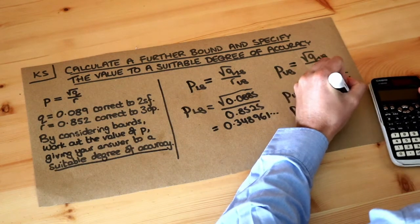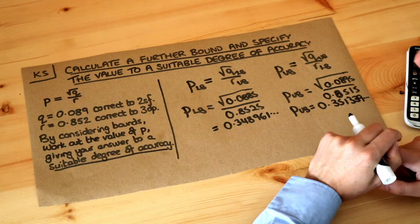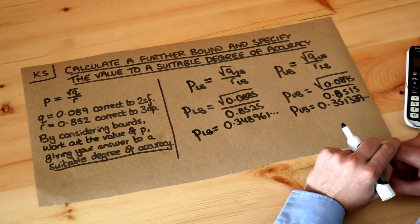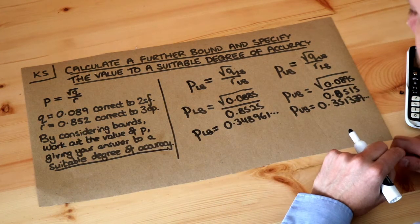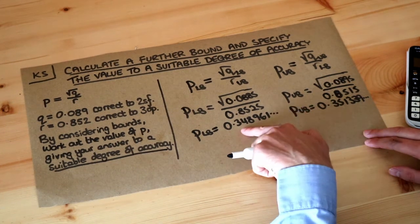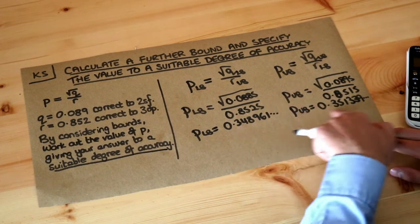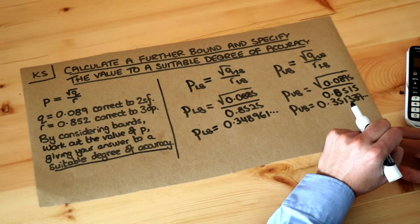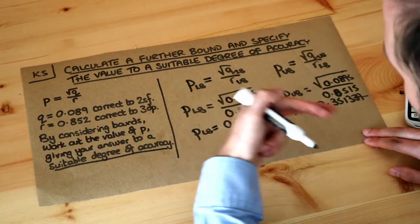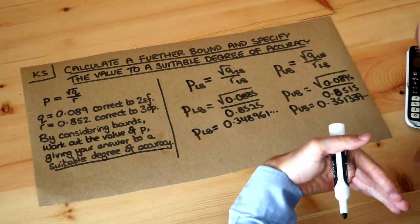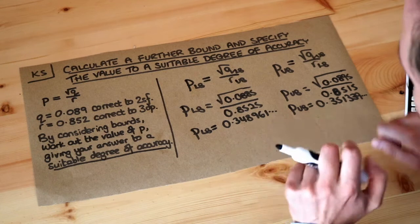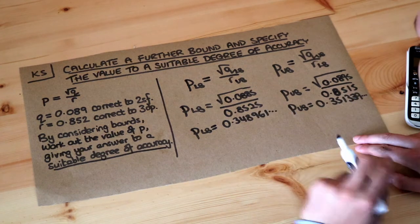What is meant by giving a single value of P to a suitable degree of accuracy? You might think we just take halfway between the two bounds, but that's not a good strategy. We know P could be anywhere between the lower bound and the upper bound. The idea is to give a single value of P where, regardless of where P falls in that range, it rounds to our value to some degree of accuracy.